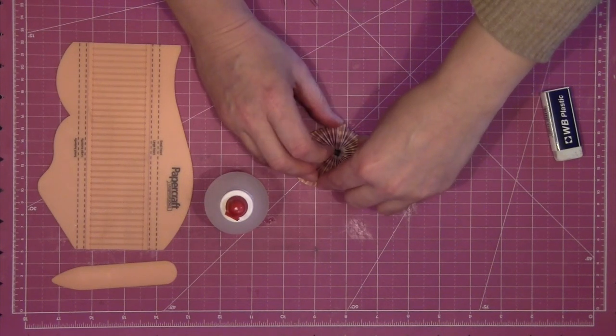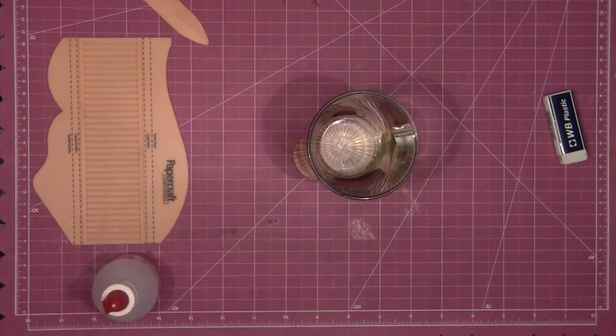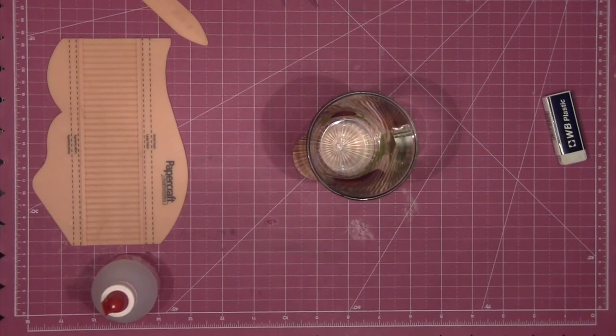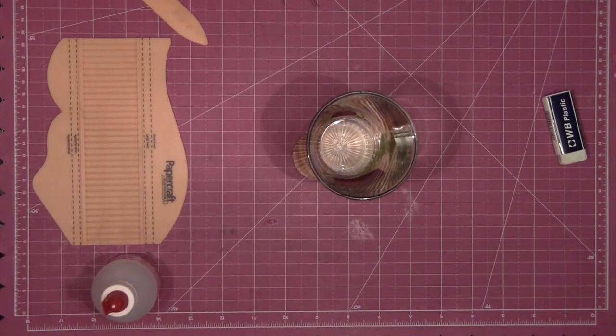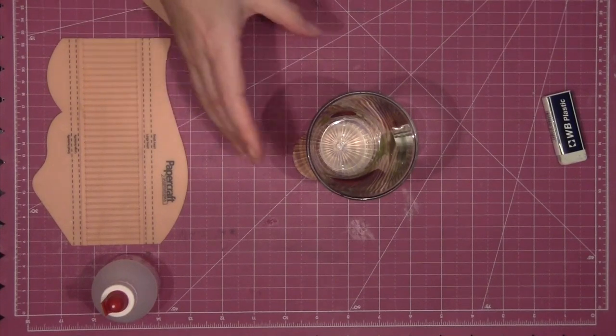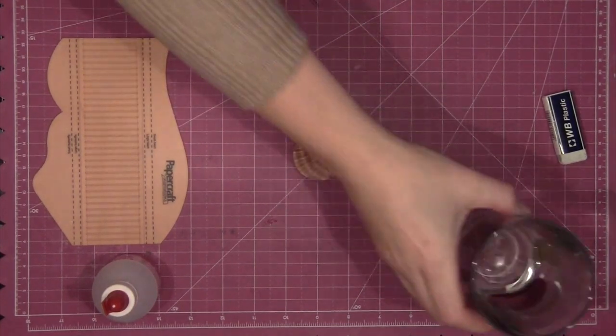Leave your rosette secured under the glass until the glue has had time to fully dry. Then you can remove the glass and see your finished 3D embellishment ready to use on all of your makes.